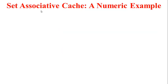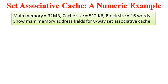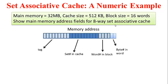To make sure we understand set associativity well, let's go through a numeric example. We take a main memory of size 32 megabytes, a cache size of 512 kilobytes, and a block size of 16 words. In this case we are going to have an eight-way set associative cache — that is, set size is eight blocks. The last two bits of the address correspond to byte number in word, and the next four bits are the word number in block, corresponding to the block size of 16 words.